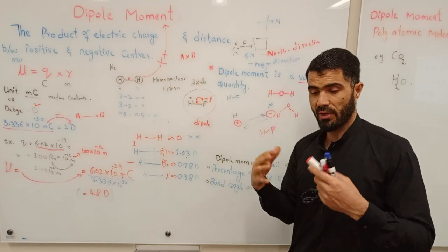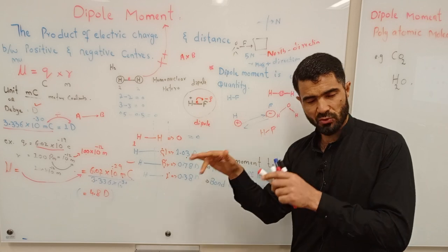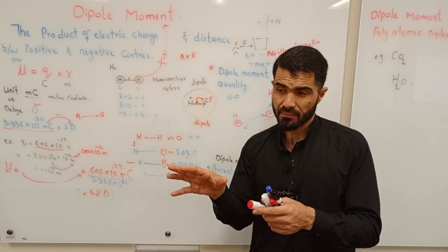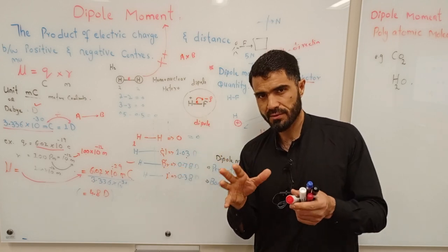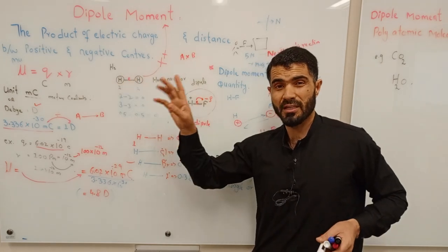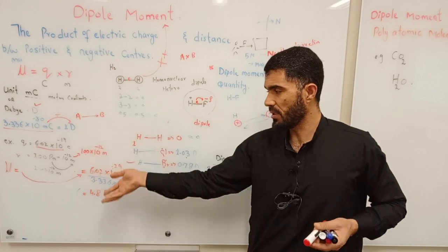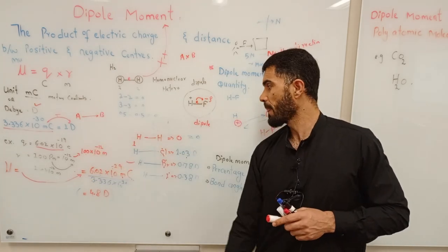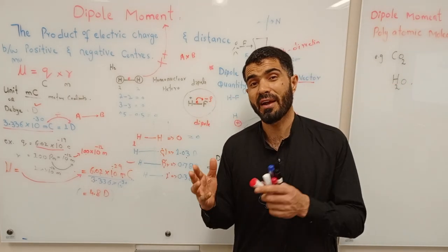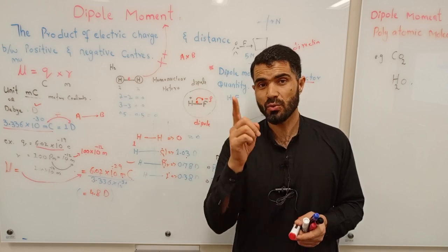To summarize: dipole moment arises in heteroatomic molecules where an electronegativity difference exists. The formula is μ = charge × distance, represented by the symbol mu (μ). Units are meter·coulomb or Debye. Dipole moment is a vector quantity with both magnitude and direction. I hope you understood this lecture. We'll see you in the next lecture.